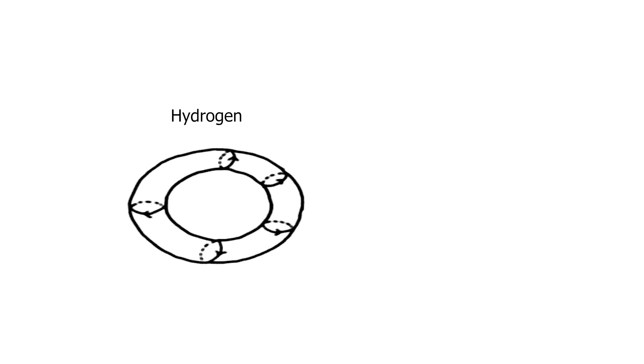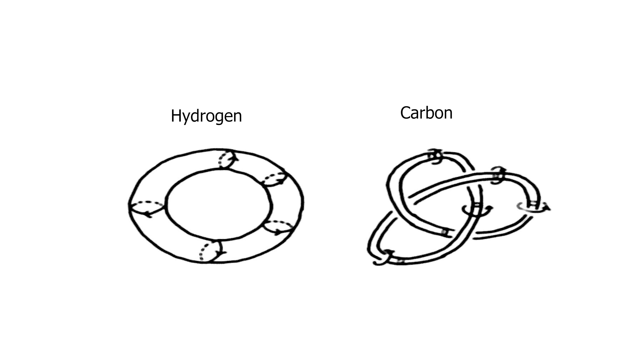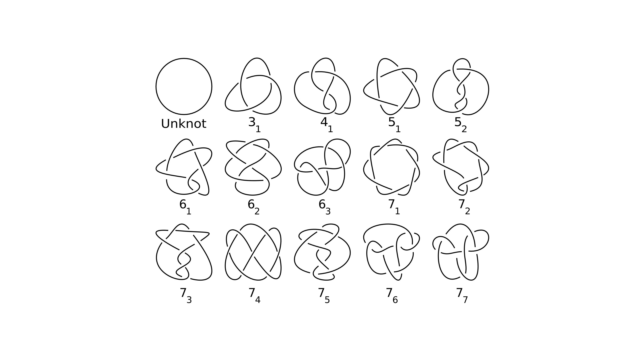So Lord Kelvin proposed that atoms were actually different types of knots in the vortexes in this ether. For example, hydrogen was the simplest knot, called the unknot, and carbon was the trefoil knot. This theory was eventually proven to be wrong, but it actually led to the way that modern knot theory is done today.